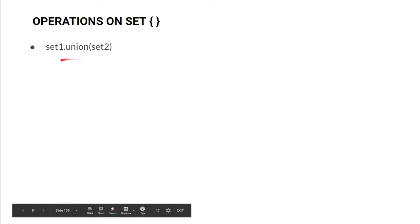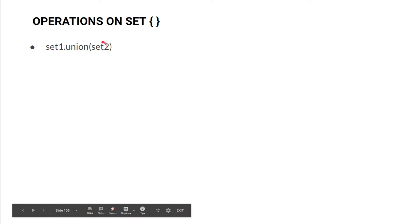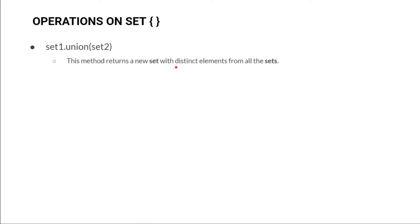The first method is union. We call the union method on a set object and another set is passed as its argument. It returns a new set with distinct elements from all the sets. Here we can pass multiple arguments also.